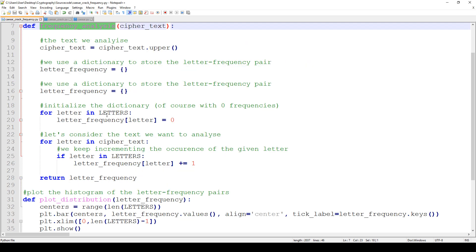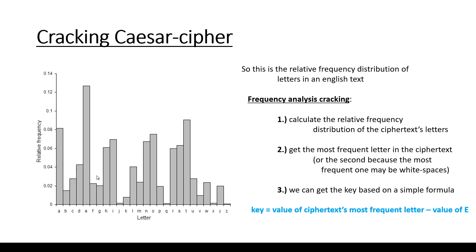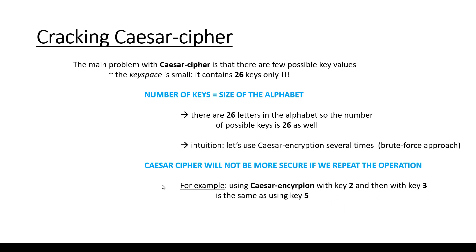We are able to crack Caesar cipher with the help of frequency analysis, and this is possible because of information leaking. The information leaking is the relative frequency distribution of the letters in the cipher text. Importantly, Caesar cipher will not be more secure if we repeat the operation — using Caesar encryption with key 2 followed by key 3 is the same as a single Caesar encryption with key 5.